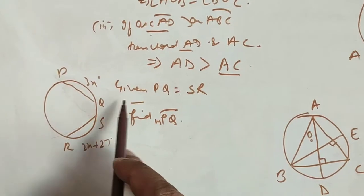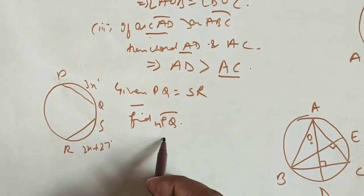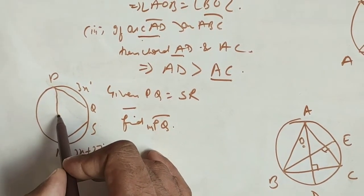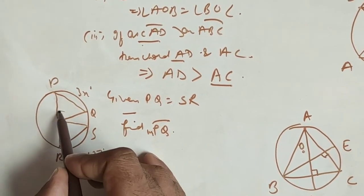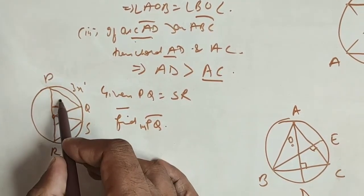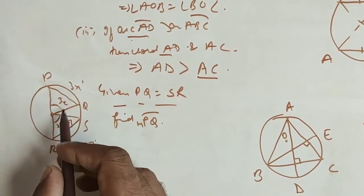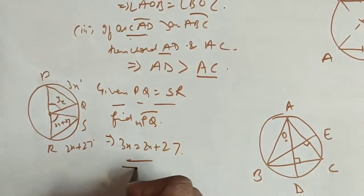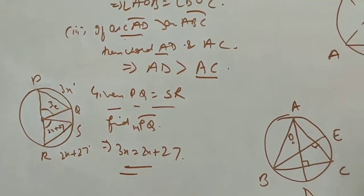Next, it is given that arc PQ is equal to arc RS. We have to find the measure of arc PQ. If arcs PQ and SR are equal, then their central angles are also equal. The central angle for PQ is 3X and for RS is 2X + 27, so 3X = 2X + 27, and we can solve this to find the measure of PQ.